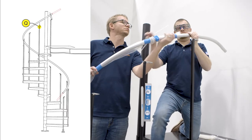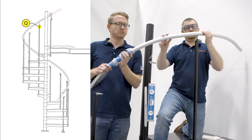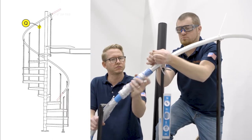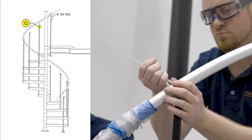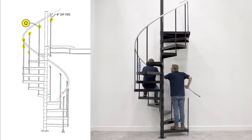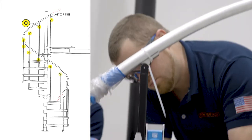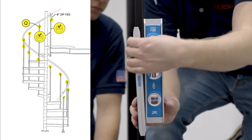Once you have the handrail properly positioned, pull back the plastic wrap incrementally in order to zip tie the handrail to each flipper head. Work your way from top to bottom, making sure to continuously check that your spindles remain plumb in both directions.